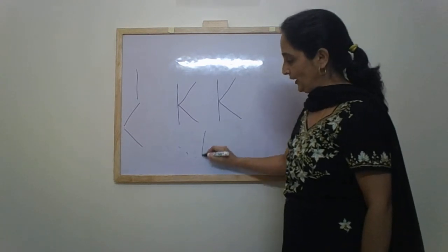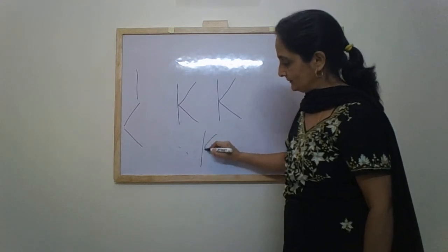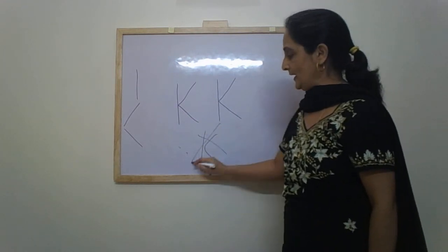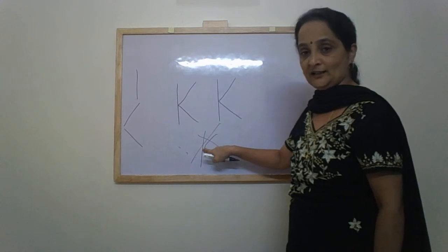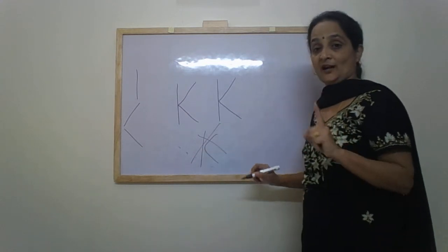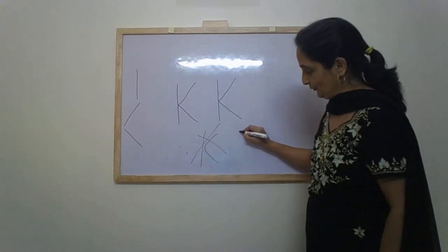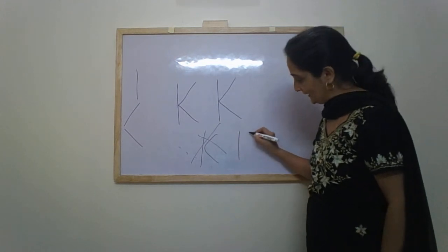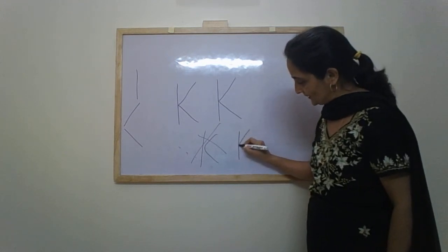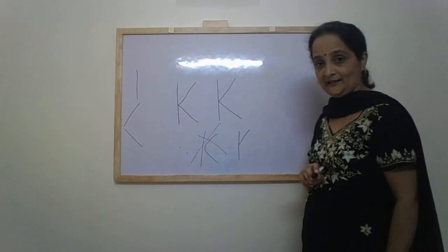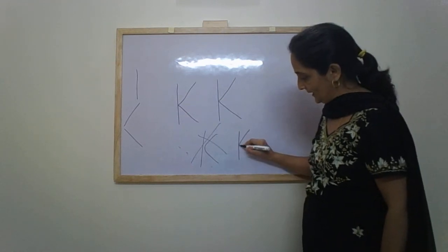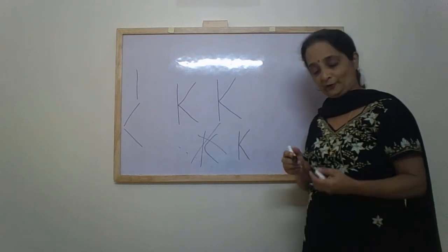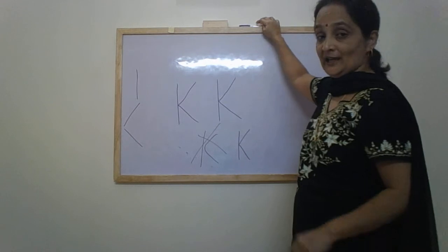Children, if you write like this, this is not correct because you did not touch the standing line. So, write very carefully. First, a standing line. Then make a slanting line that touches the standing line. And then make another slanting line that goes in the front. Remember, letter K.